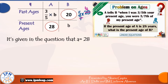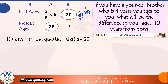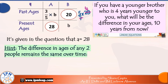Now, let me ask you a simple question. Suppose you have a younger brother who is four years younger to you. Can you tell me what will be the difference in your ages 10 years from now? The answer is: if he is four years younger, the difference in your ages will always be the same — four years, isn't it? We need an equation to solve for the value of B. We use this condition which is true for all problems on ages: the difference in ages of any two people remains the same over time.